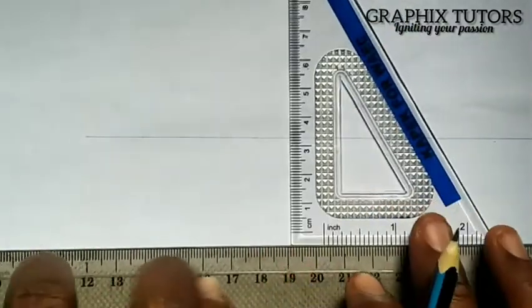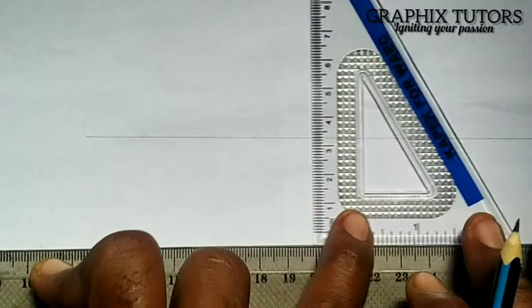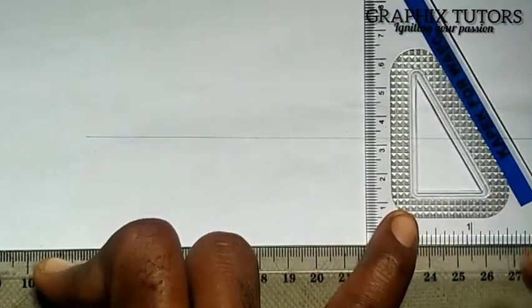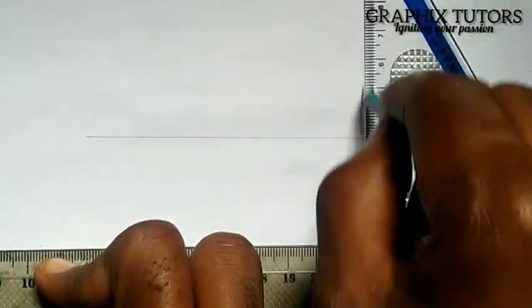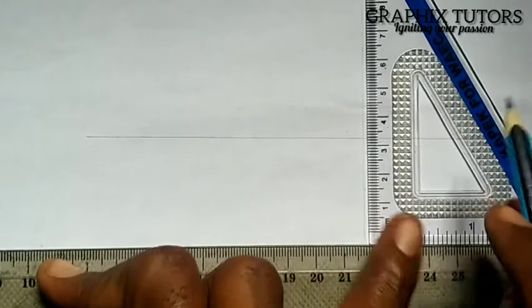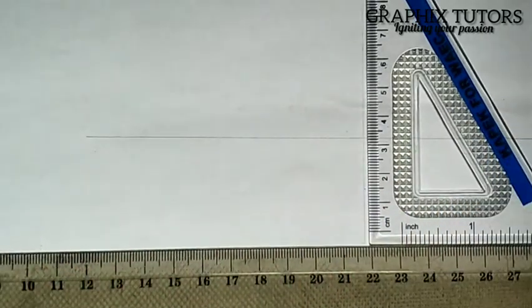And with the same, you take your set square and you place it, and you draw your vertical line. So in doing that, you're having something like this.